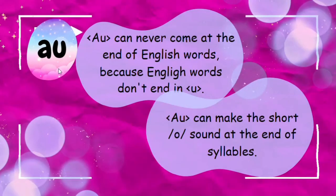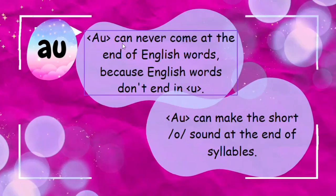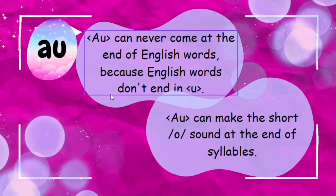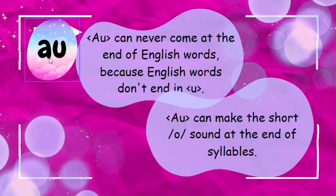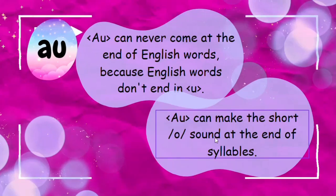Now we have AU saying the AW sound. There are two points to remember. First, AU can never come at the end of English words because English words don't end in U. So if you hear the AW sound at the end of any English word, never use AU to write it. Second, AU can make the short AW sound at the end of syllables, and this happens often.